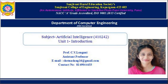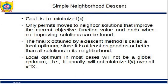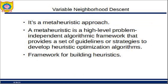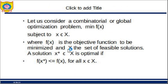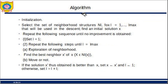In our previous video we learned about local search and hill climbing algorithm with simple neighborhood descent. Now we are learning about variable neighborhood descent. We have f of x and we have to find the minimum of f of x — that is the global optimization problem. f of x is our objective function which we want to minimize, so for all values of x belonging to capital X, f of x star should be less than or equal to f of x, and x star is our optimal solution.